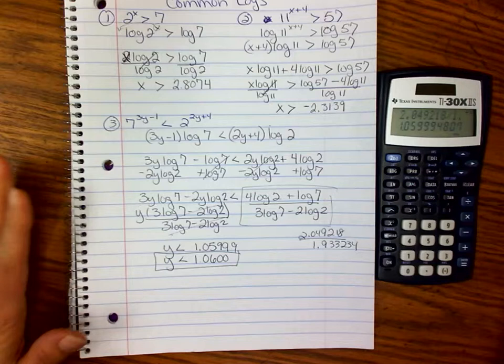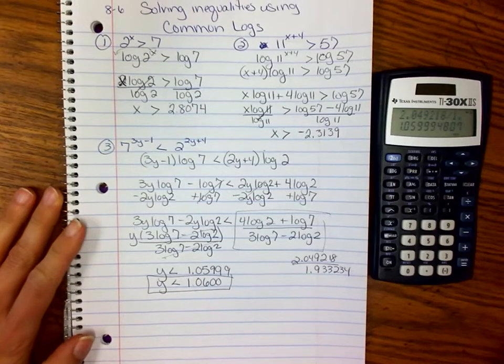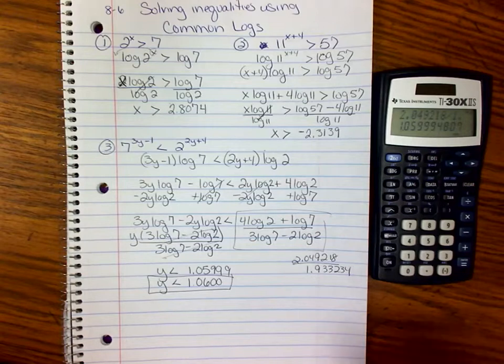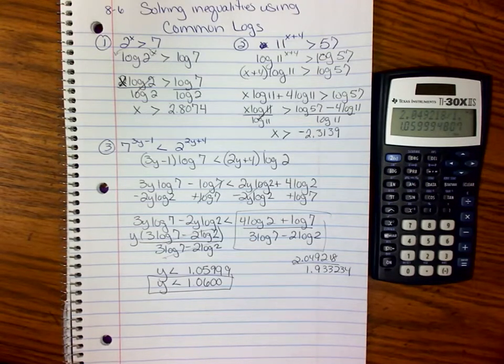It's really messy. You need to be really careful with your signs, your parentheses. It looks awful, doesn't it? But it's not that bad. It's just adding, subtracting, multiplying, and dividing. And you can definitely do that.